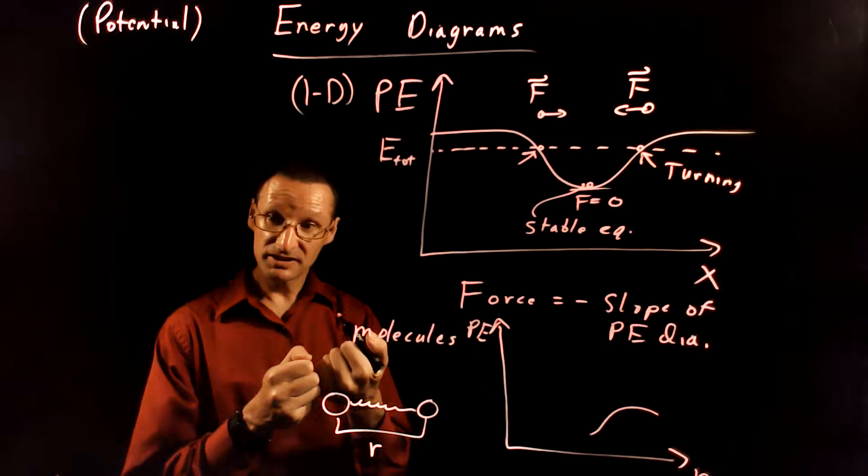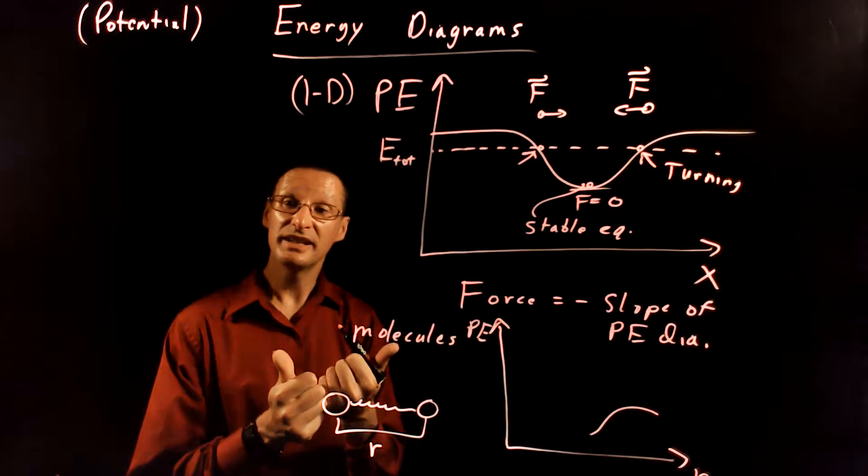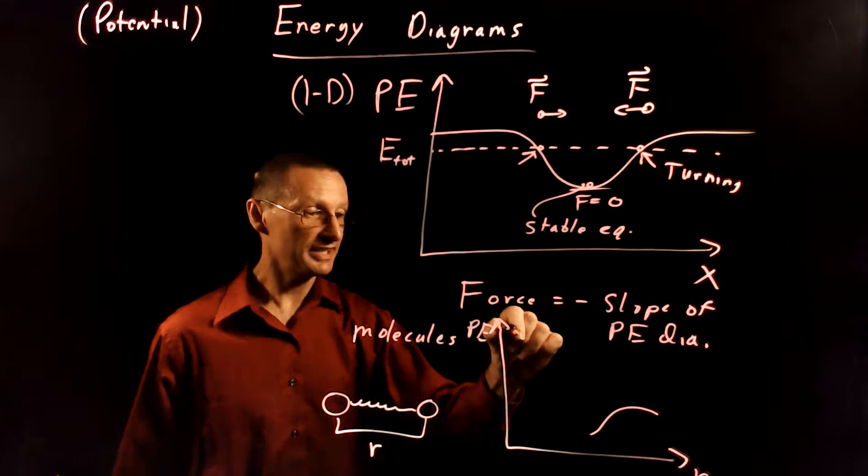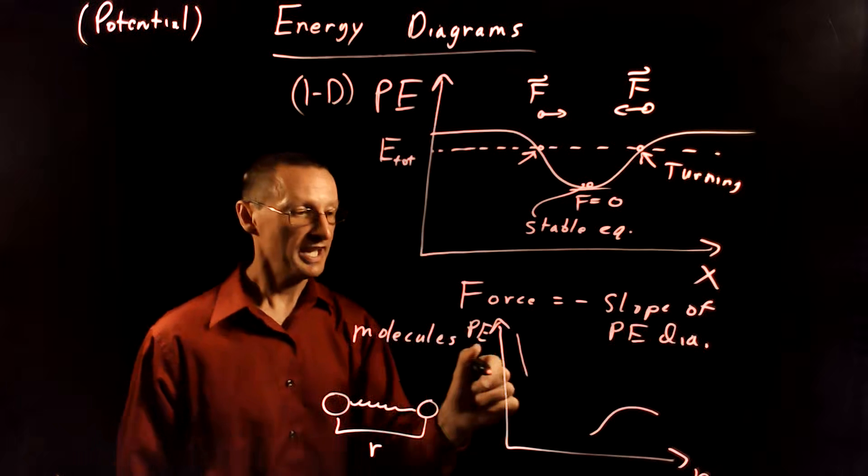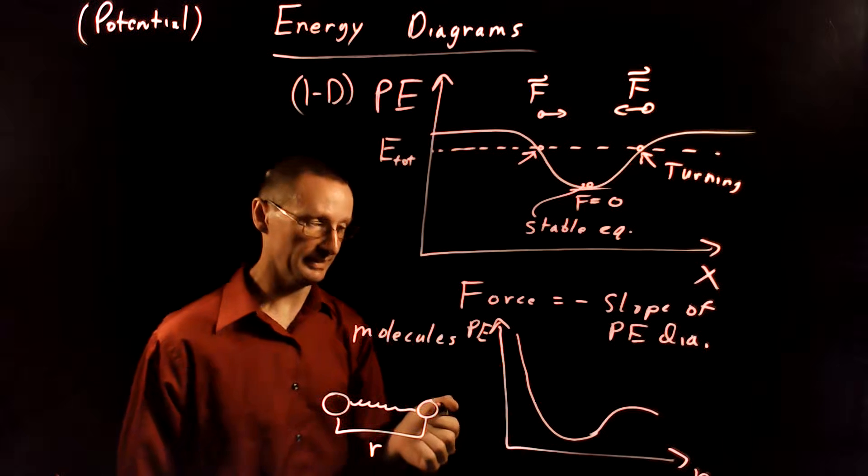And if I put them really close together, they're going to feel a large repulsive force, which is going to want to increase R, which will be a positive force, which means I need to have a negative slope. And so if you plot the potential energy diagram here, you're going to get something that looks like this.